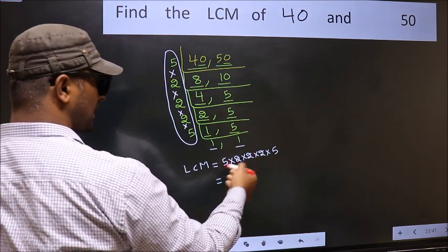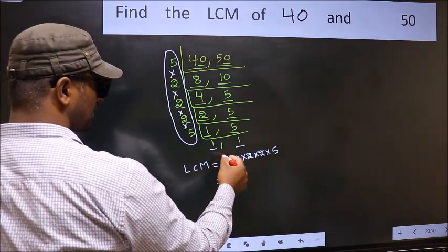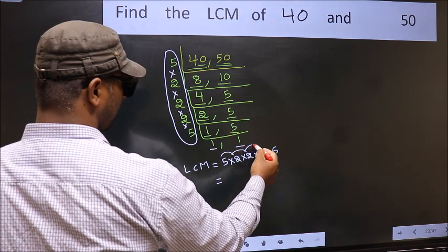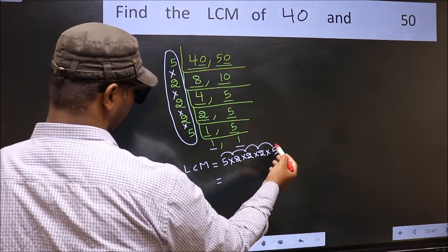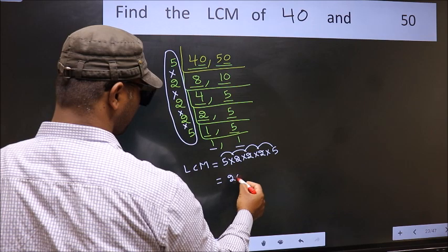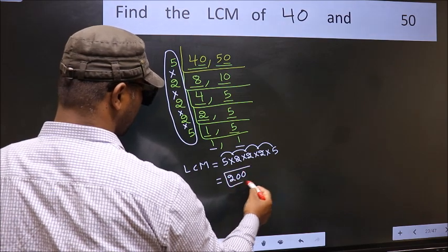So let us multiply these numbers. 5 into 2, 10 into 2, 20 into 2, 40 into 5, 200 is our LCM.